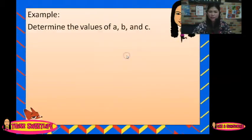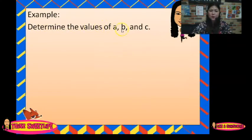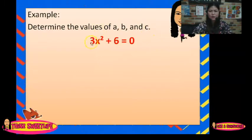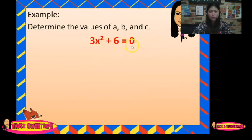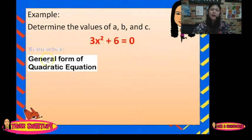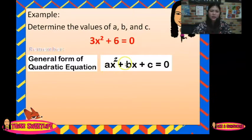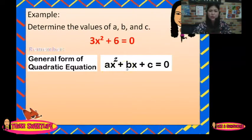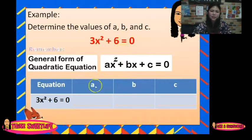We have an example where we identify the values of A, B, and C. We have the equation 3x squared plus 6 equals 0. Remember the general form of a quadratic equation is Ax squared plus Bx plus C equals 0.